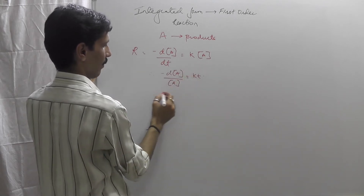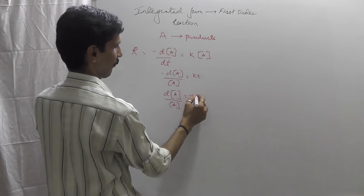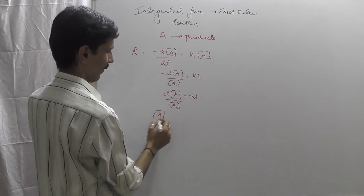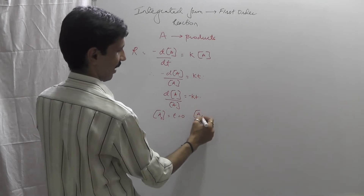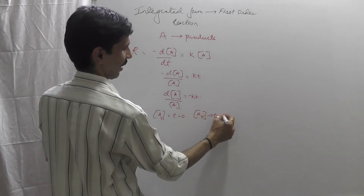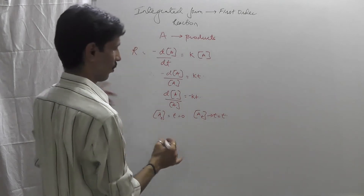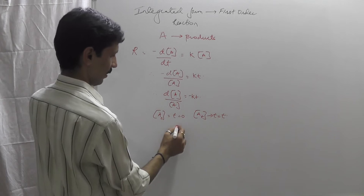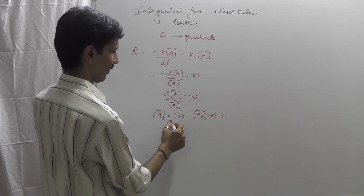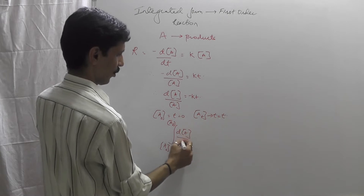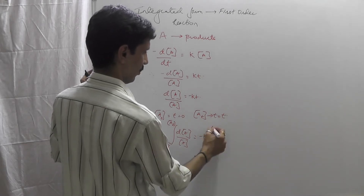Rearranging, d[A]/[A] is equal to minus K dt. The concentration at time zero is A0, and the concentration at time T is At. Carrying out the integration from A0 to At for d[A]/[A] on the left, and from 0 to T on the right, gives us the integrated form.